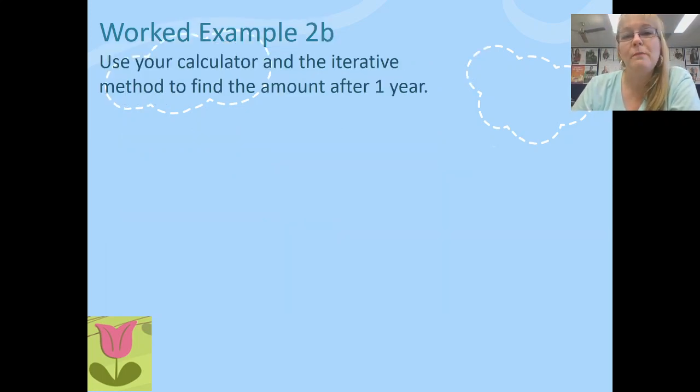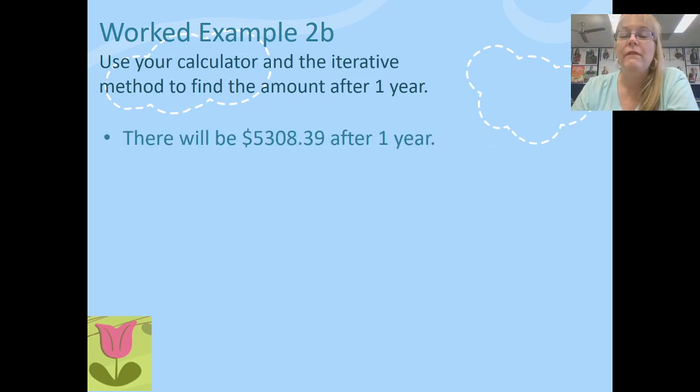Now I'm asked to use my calculator and the iterative method to find the amount after one year. So I simply need to add the principal into my calculator 5,000 and press my equals button and it will come as my answer. And now I need to multiply that by 1.005. And then I press the equals button. And if I keep pressing the equals button 12 times, because there's 12 periods in one year, I will end up with 5,308.39 on my calculator. I suggest you get your calculator out now and have a go for yourself.